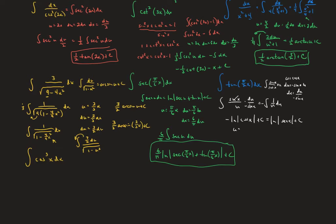For the integral of tangent of pi over 2 x, we let u equal pi over 2 x. Then du is pi over 2 dx, making dx equal to 2 over pi du. The integral becomes 2 over pi times the integral of tangent u du, giving negative 2 over pi times the natural log of the absolute value of cosine of pi over 2 x, plus c.